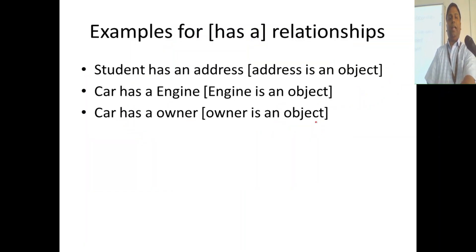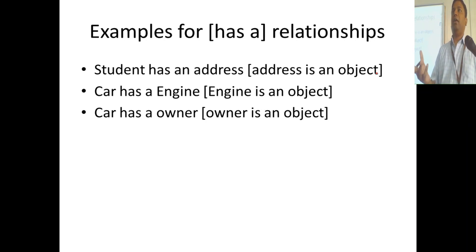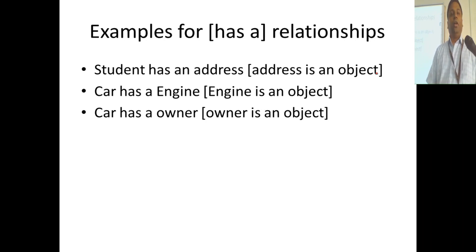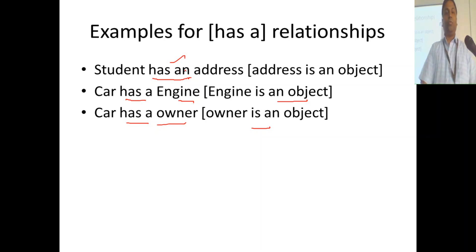Some examples of 'has-a' relationships: student has an address. Address itself can have many attributes like street, door number, city, state, country — so address can be an object. A student can have a permanent address and a temporary address. Likewise, car has an engine — engine is an object — and car has an owner. All these are 'has-a' relationships. So when you are given a system to design, you have to look for hints in the problem statement. That is the only clue for designing an object-oriented programming system.